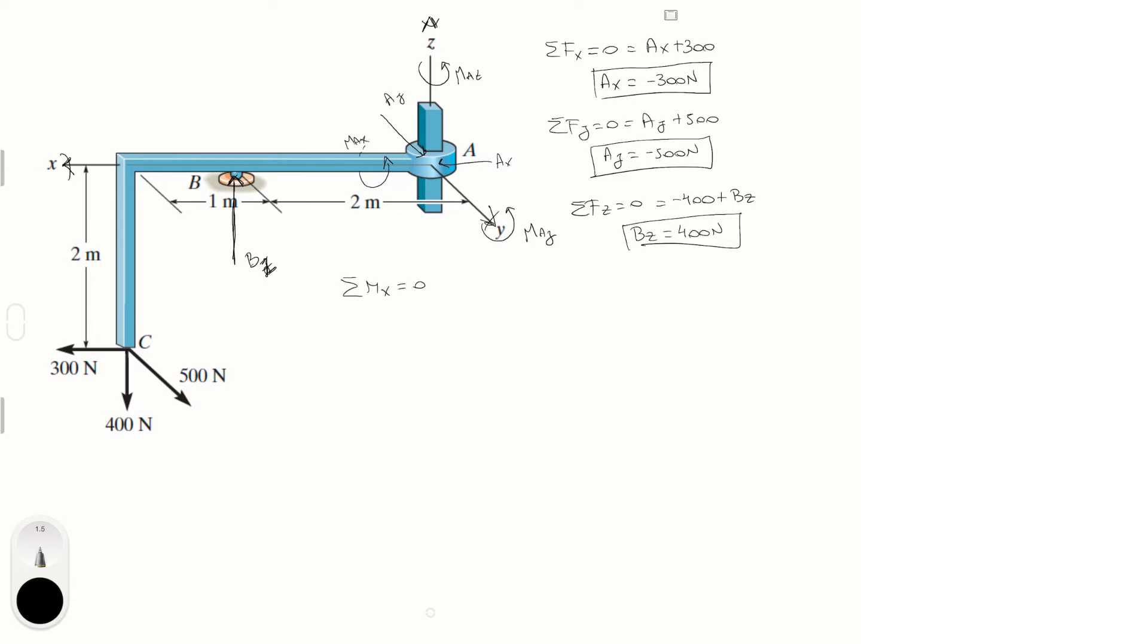Sum of the moments in the X is equal to zero: MAX plus 500 times 2, because about the X axis only this 500 force is generating a moment aside from the reactive moment. The 400 is not generating a moment about the X axis because it sits right on the XZ plane, same for the 300 newton force and the reactive force BC. So 500 times 2, that's the distance from C to the X axis. Solving for the reactive moment, MAX equals minus 1000 newton meters.